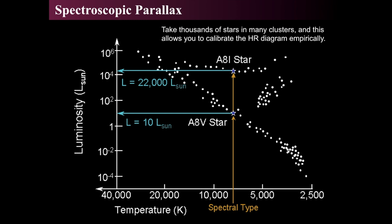Here we have a sketch of an HR diagram, and we see a bunch of stars on a main sequence. The first example is an A8V — type A, spectral type A, subclass 8, and luminosity class V, or dwarf. If we have a calibrated HR diagram — meaning we know exactly what the luminosity of all A8V type stars are — then all we have to do is identify one, and it gives us the luminosity. It may be ten times the luminosity of the Sun. And then if you find that it's very, very dim, then it must be very far away.